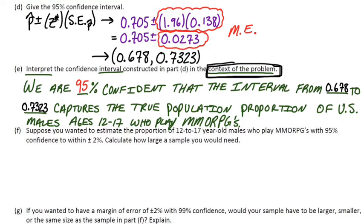Part F switches things up a little bit. It says suppose you wanted to estimate the proportion of 12 to 17-year-old males who play MMORPGs with 95% confidence, but you want it to be within plus or minus 2%. Calculate how large a sample you would need. So we've already done a 95% confidence interval, but now we want to squeeze it down to only be 2% for the margin of error. Before we had a little bit bigger than that, it was 0.0273. And at the end of the day, we're asking what should N be. How large should the sample size be?